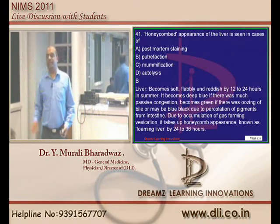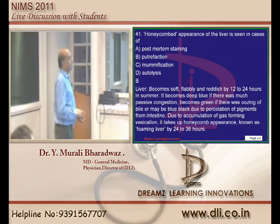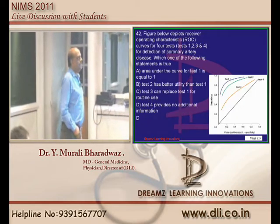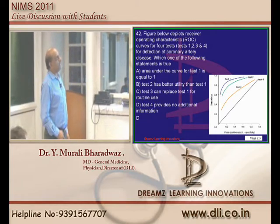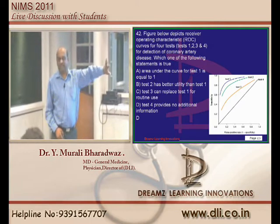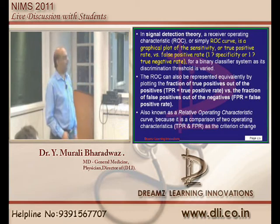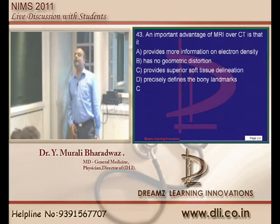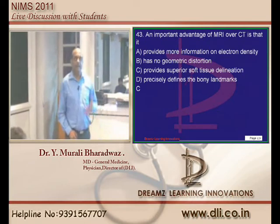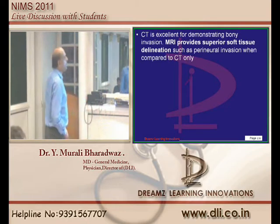Honeycomb appearance of the liver is classically seen in putrefaction - a favorite question of the examiner. Receiver operating characteristic curves are another topic, but leave that for literature review. What is the advantage of MRI compared to CT? MRI gives better soft tissue delineation. CT gives better bony delineation and calcification can be seen better with CT.